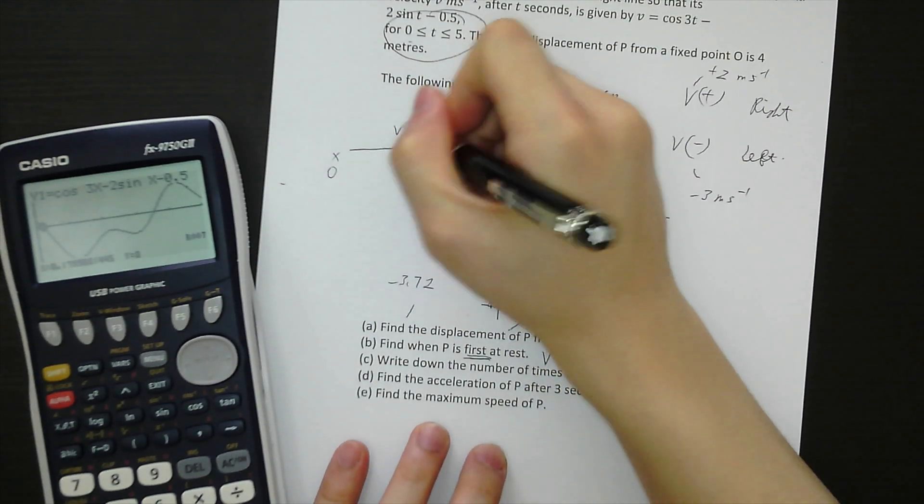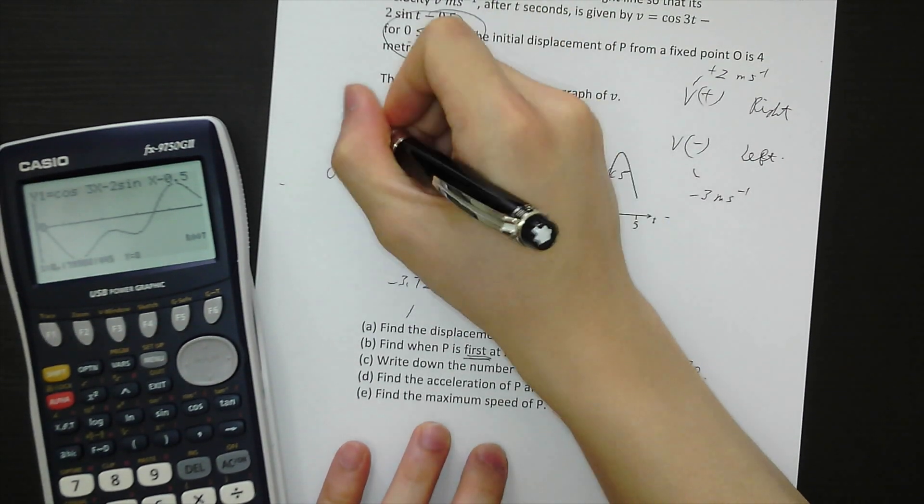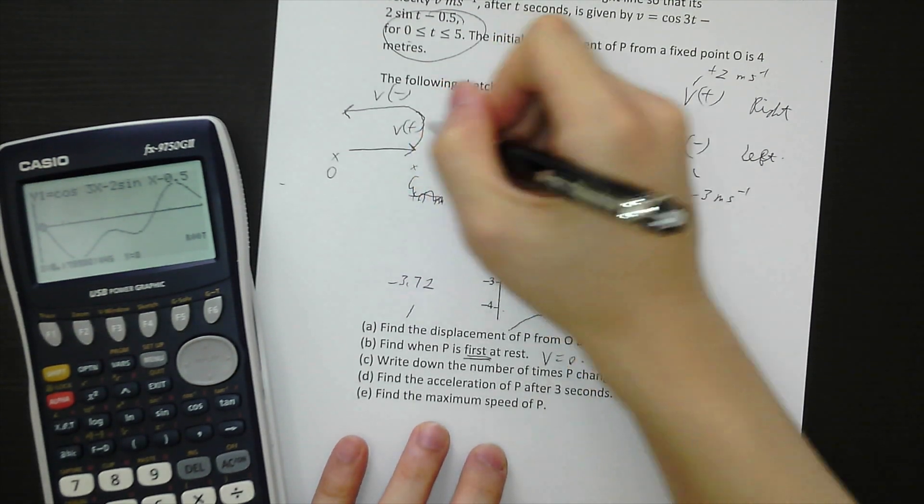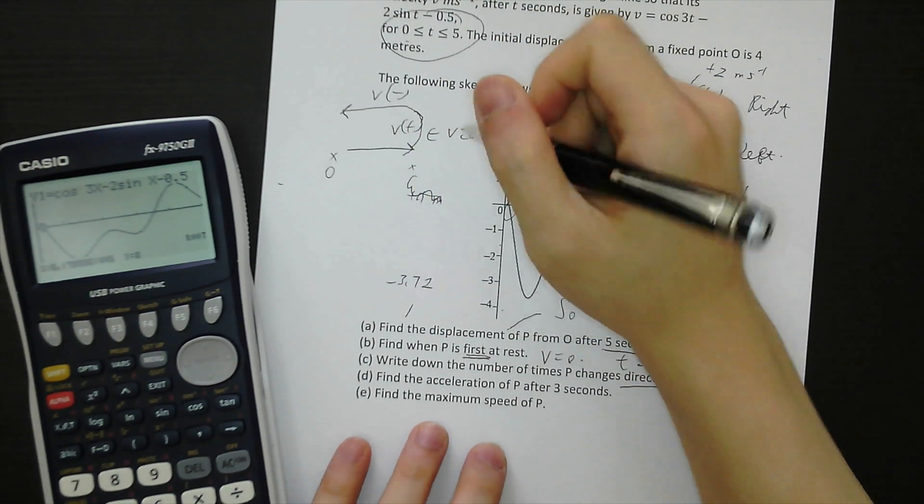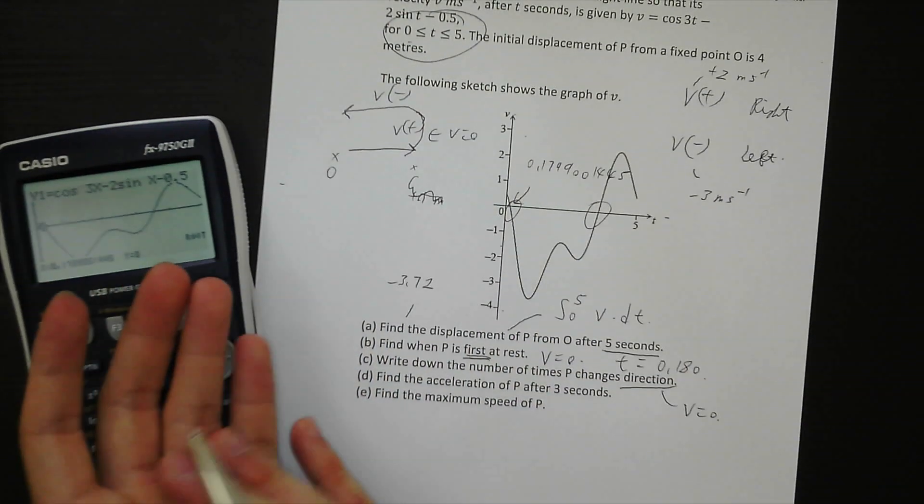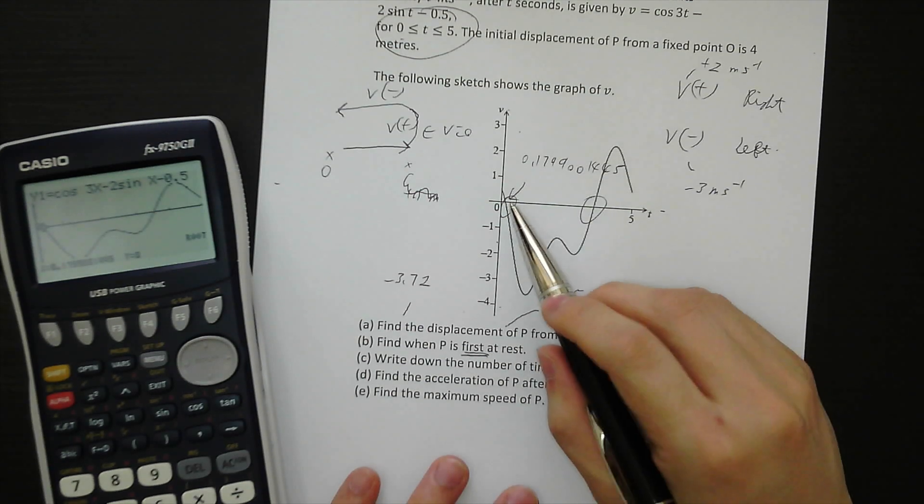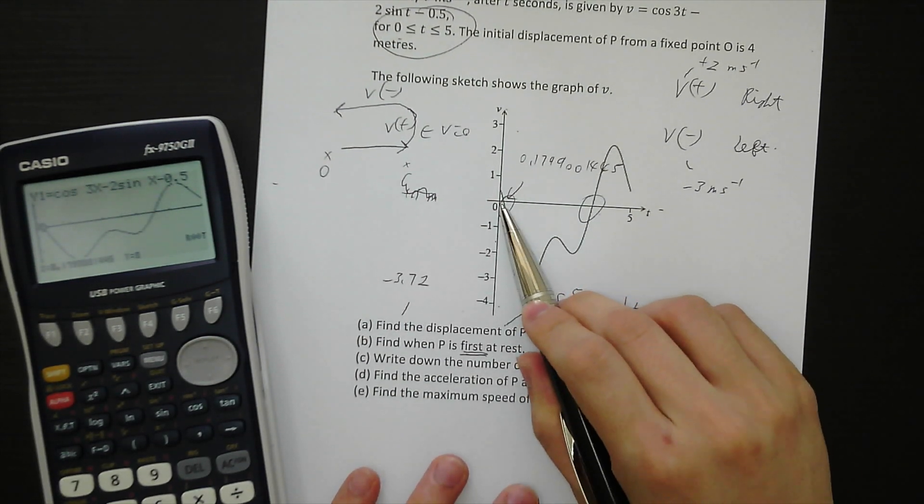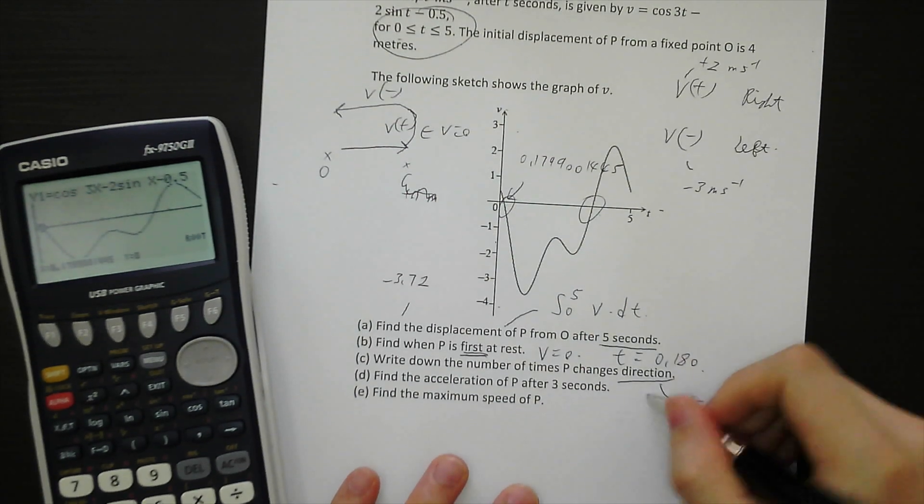Going right is velocity positive. Going left is velocity negative. So that means velocity equals 0 is the moment that changes direction. It's neither going right nor going left. So there are two times it changes direction because there are two roots.